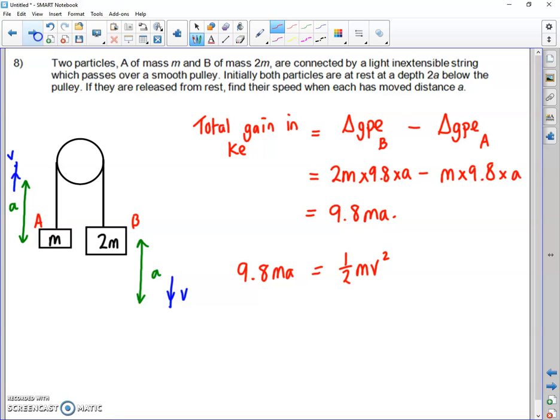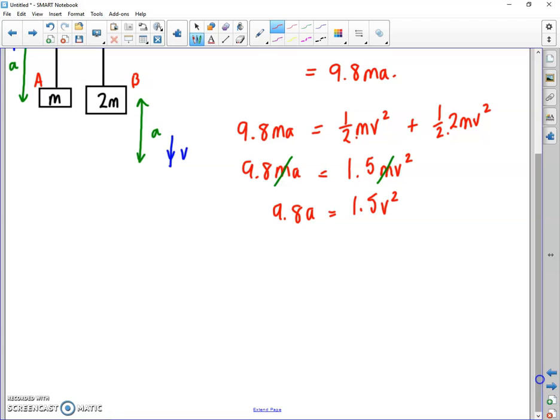So it's the little one's kinetic energy, a half of m v squared, plus the big one's kinetic energy, a half of 2m v squared. That gives us 9.8ma equals 1.5 mv squared. We've got half an m on the first term and a whole m on the second term, so one and a half mv squared. Our m's cancel, so 9.8a equals 1.5 v squared. It's v that we're trying to find, so we divide 9.8 by 1.5, which gives you 6.53 recurring a equals v squared. The best you can do is v equals the square root of 6.53a.